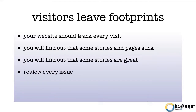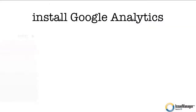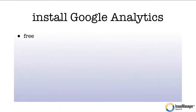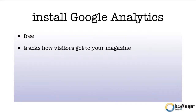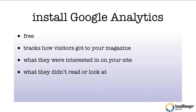What I would recommend you do is review every issue and take a look at the data. How do you do this? This is the magic of Google Analytics. Google Analytics is a free service that you can install on your magazine. What it does is it tracks how visitors got to your magazine, tracks what they were interested in on your site, and also tracks what they didn't look at — which is almost more important. It's great to know what people are interested in, but it's equally important to know what they didn't like, so you can weed away the stuff they don't like and build upon the stuff they do like. You get that direct feedback from Google Analytics.